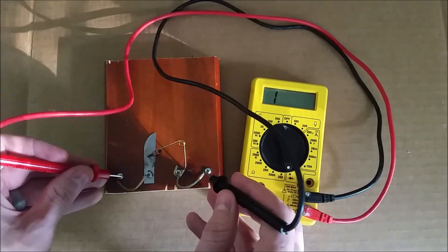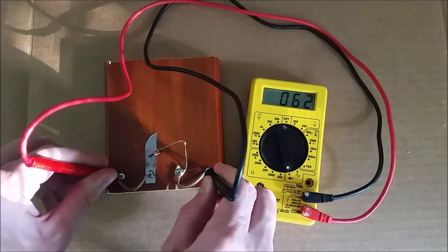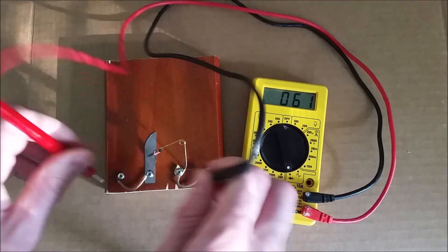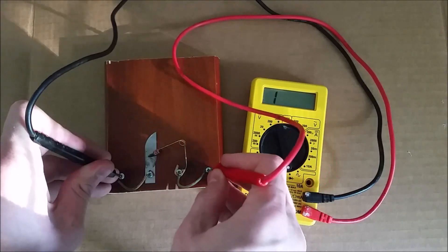the resistance in both directions is about the same. So right now, since there isn't really any rust on the razor blade, it's not acting as a diode.